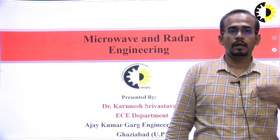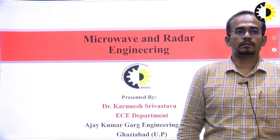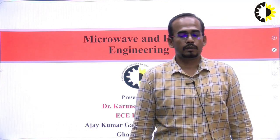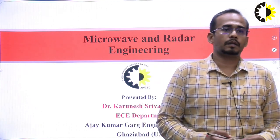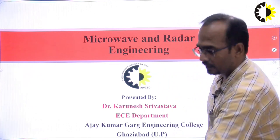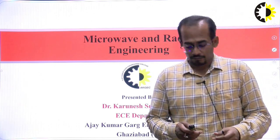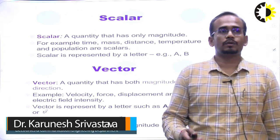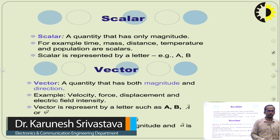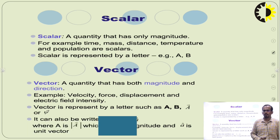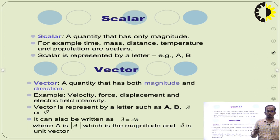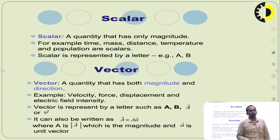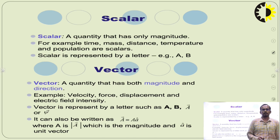Welcome everyone. In today's lecture I am going to discuss the basic requirements or prerequisites for microwave and radar engineering. I will cover what is a scalar, what is a vector, what is dot product, what is cross product, what is a unit vector, and how to use the different coordinate systems: Cartesian coordinate system, cylindrical coordinate system, and spherical coordinate system.